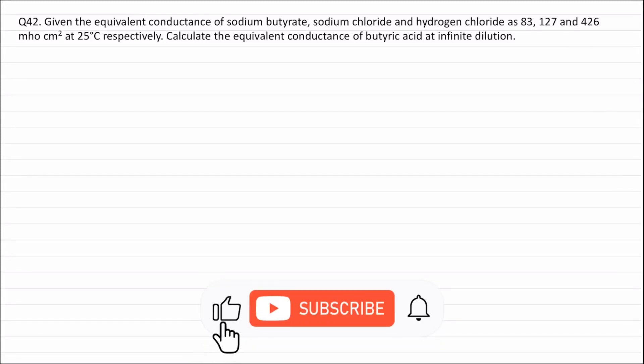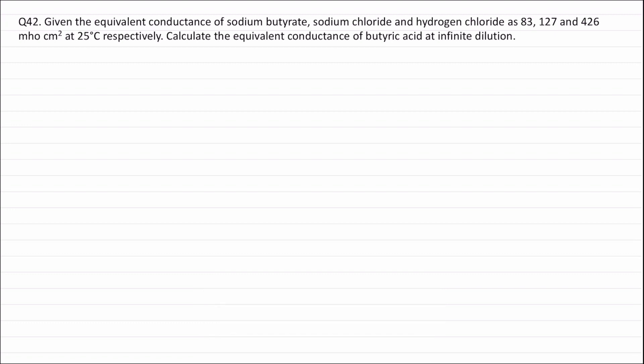Question 42. Given the equivalent conductance of sodium butyrate, sodium chloride, and hydrogen chloride as 83, 127, and 426 per ohm centimetre square at 25 degrees centigrade respectively. Calculate the equivalent conductance of butyric acid at infinite dilution.